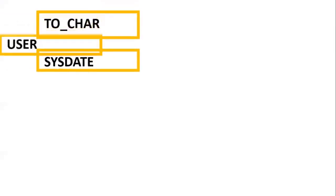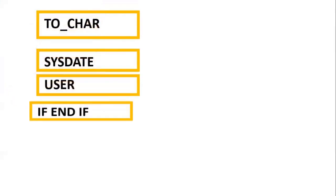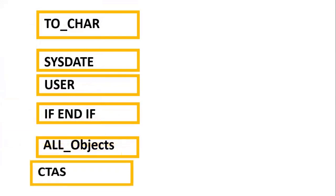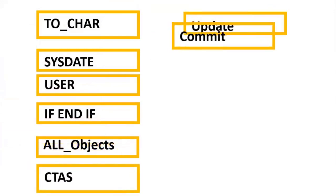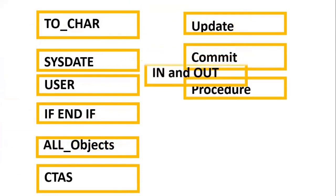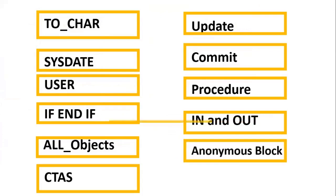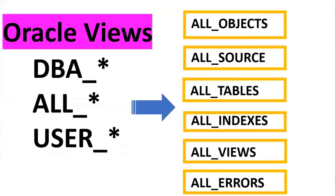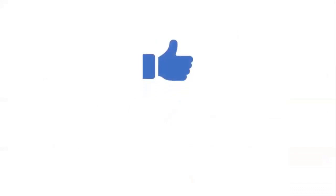By solving this requirement we have understood concepts including TO_CHAR, SYSDATE, pseudo columns, CASE statements, NVL, DML, TCL, procedures with IN and OUT parameters, anonymous blocks, and DBMS_SCHEDULER. Try to solve this type of requirement so that concepts become clear and logical thinking is improved. The next upcoming video covers Oracle views — Oracle provides many views like ALL_OBJECTS, ALL_SOURCE where procedure and function code is stored, information about tables, indexes, views, and errors in objects. If you like the content, subscribe and share the channel.